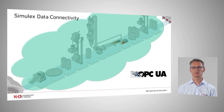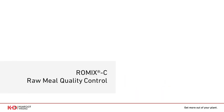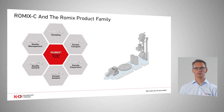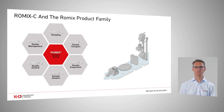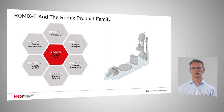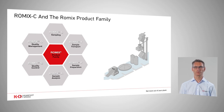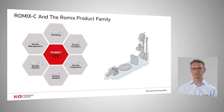Let us now take a look at our quality control solution, ROMIX-C. ROMIX-C is our ROMIX quality control solution and it is part of the ROMIX product family. The ROMIX product family covers all functions along the entire production process — from automatic sample taking to automatic tube transport, sample preparation and final analysis. ROMIX is our all-in-one solution that supports you from start to finish. Today we will look especially at ROMIX-C, which is also linked to Simulex. The control loop consists of an internal model predictive controller.